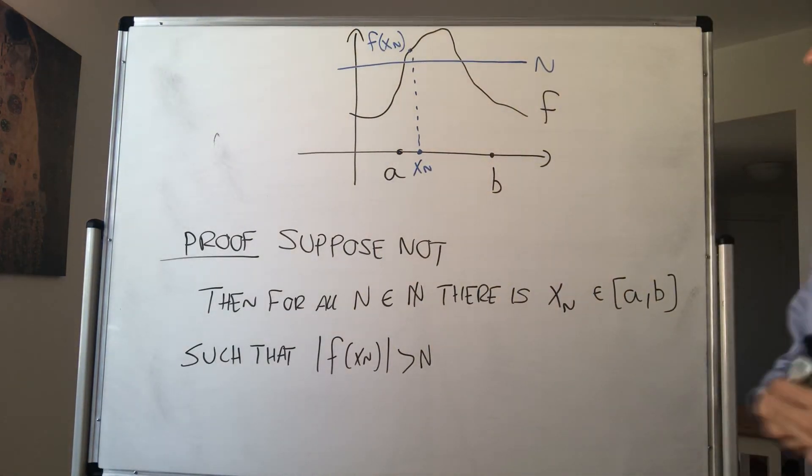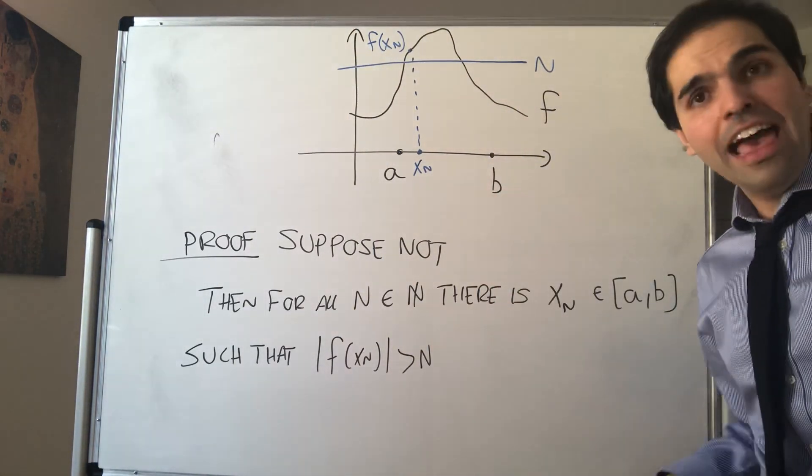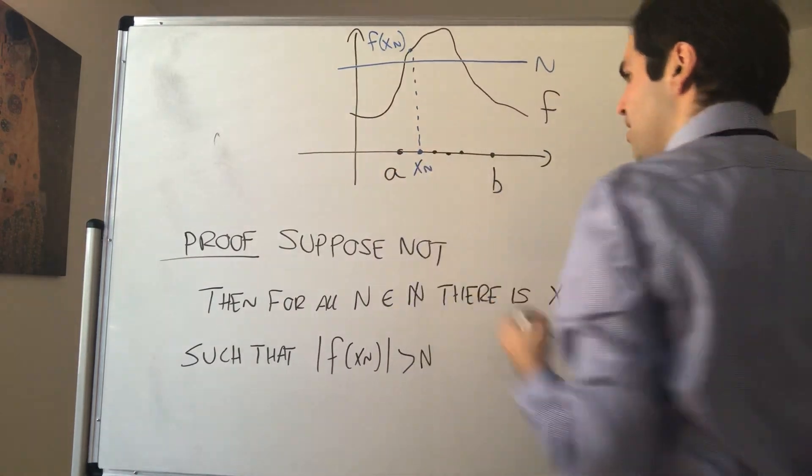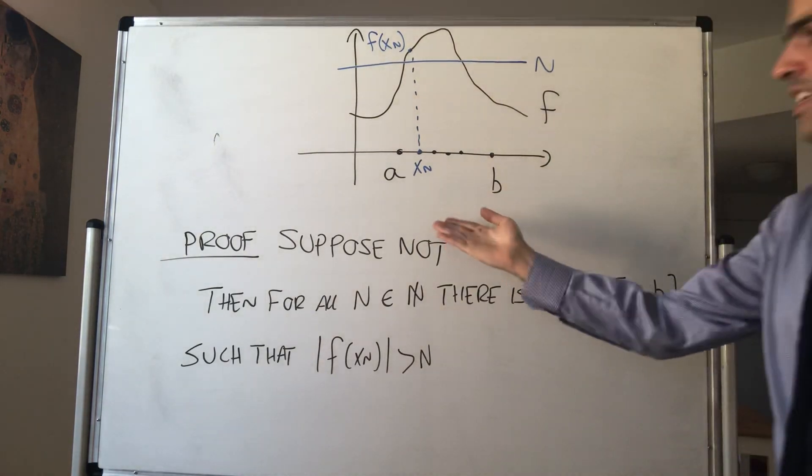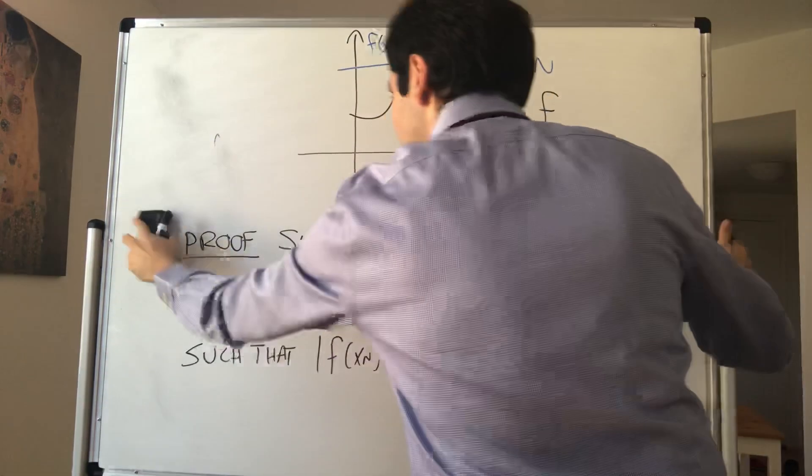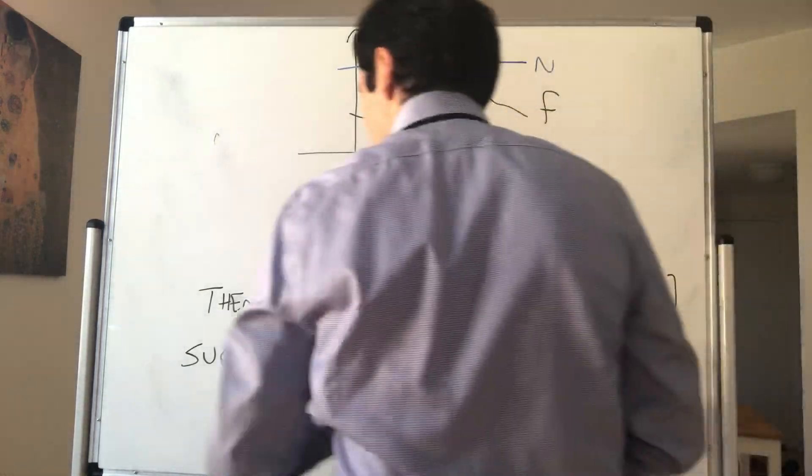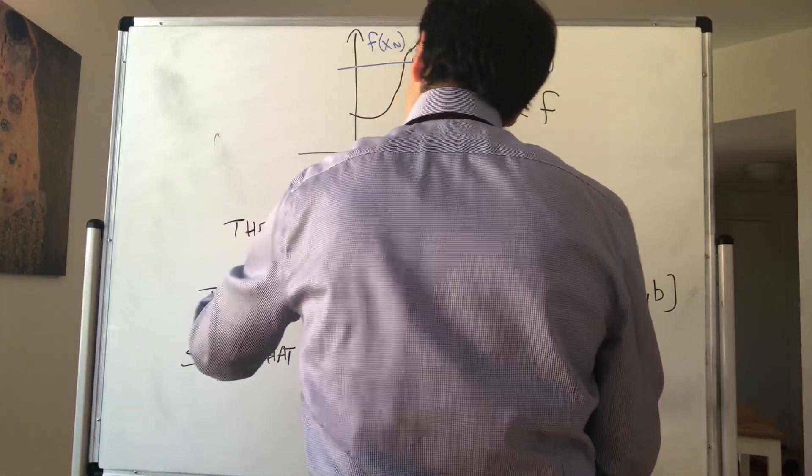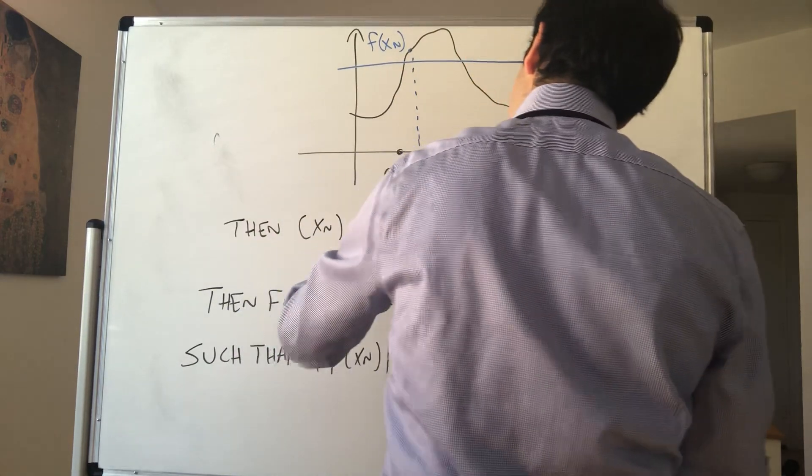But here's the thing: since you have it for all N, you therefore get a sequence xₙ. What do we know about the sequence? Well, the sequence is in [a,b]. Then xₙ is in [a,b].